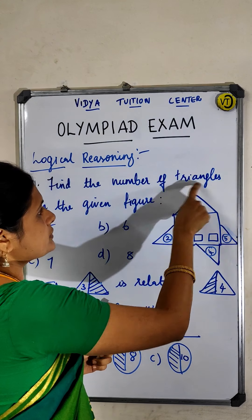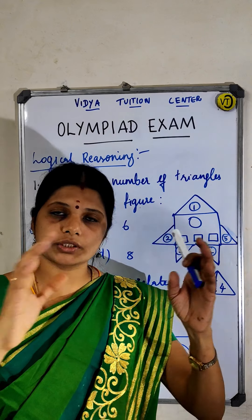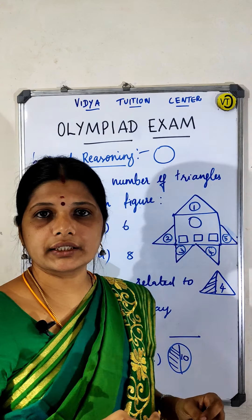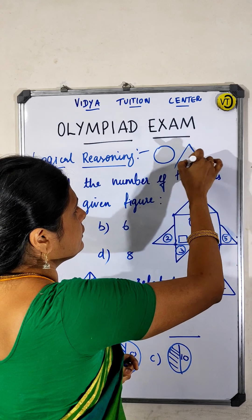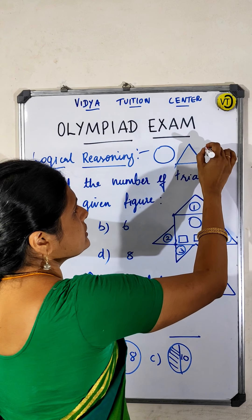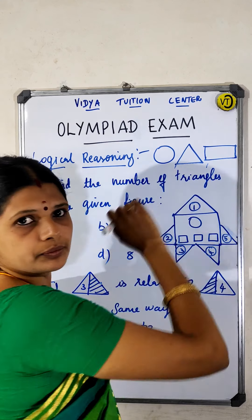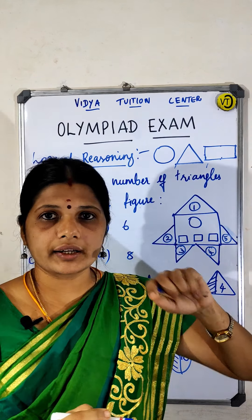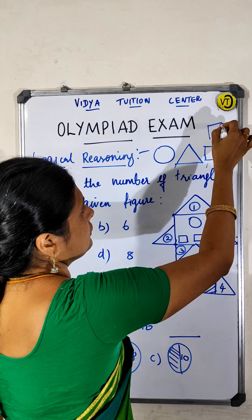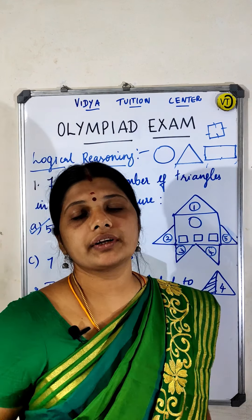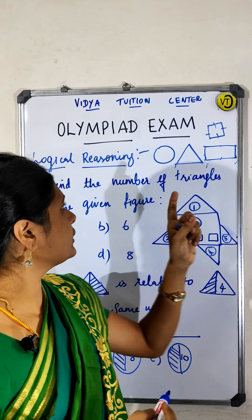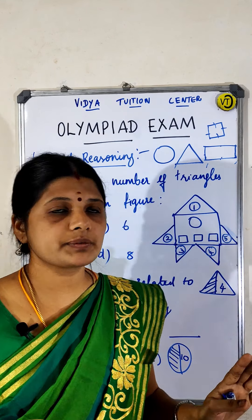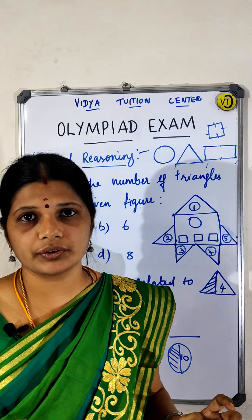Before attempting shape-based problems, class 1 students must know the basic shapes. A circle is a round shape. A triangle is a three-sided figure. A rectangle has two pairs of equal opposite sides. A square has all four sides equal. Knowing these four basic shapes — circle, triangle, rectangle, and square — is enough for you.